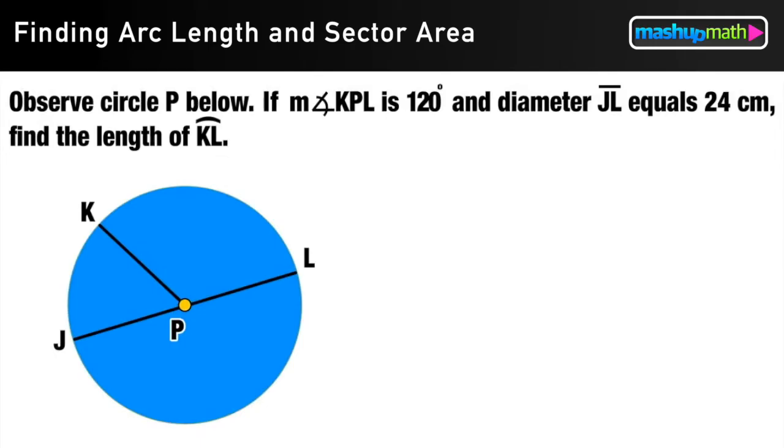Alright, so let's go ahead and jump into our first example here. We have circle P shown below, and we know that the measure of angle KPL is 120 degrees, the diameter JL equals 24 centimeters long, and we want to find the length of arc KL.